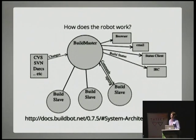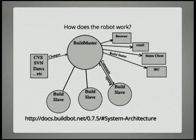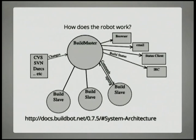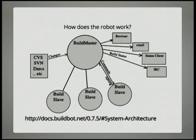You can't just simply build a robot. This is kind of what BuildBot looks like — this is from 0.7.5, and BuildBot is now up to 0.8.7. But it's pretty much exactly the same. You have this concept of a build master that gets changes from a version control system. It can push out status of builds to browser, email, IRC, whatever, and it has a bunch of build slaves that it tells to do things.